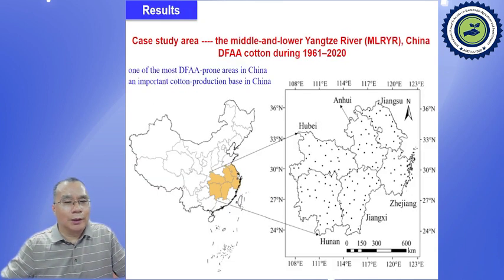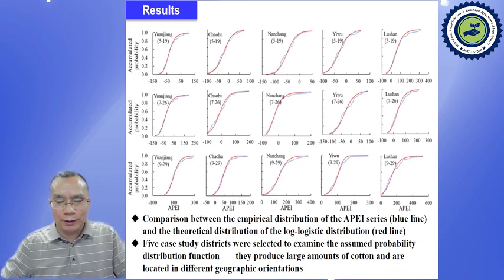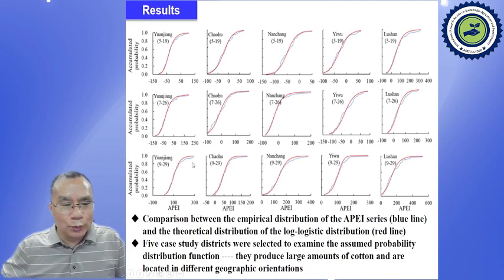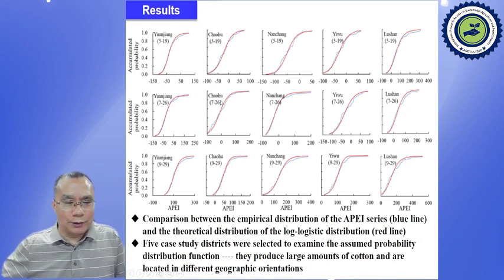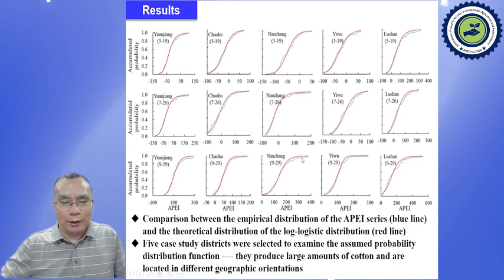We used our case study area to perform the analysis. This figure shows us the comparison between the empirical distribution of the flood and drought index APEI, combined with the theoretical distribution. The red line is the theoretical distribution and the blue line is our calculated APEI distribution. The two match very well.